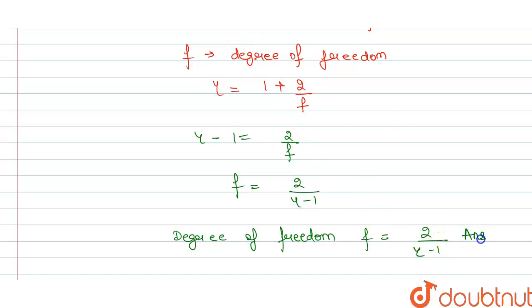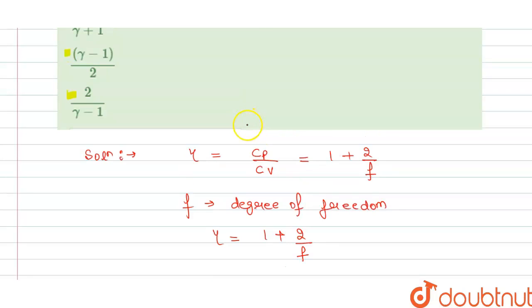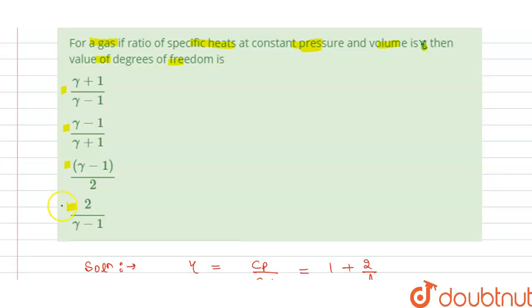And this is the answer for this question. This is the degree of freedom at constant pressure and volume. So now we check which option is correct here. Our option D is correct here. Thank you.